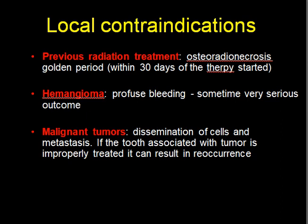The third local contraindication is malignant tumour. If extraction is attempted in a patient suffering from a malignant tumour in that area, it can lead to dissemination of cells and metastasis. If a tooth associated with a tumour is improperly treated, it can result in recurrence.